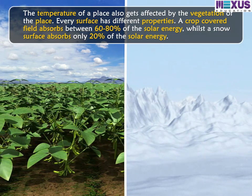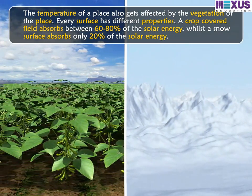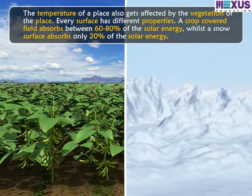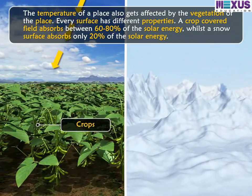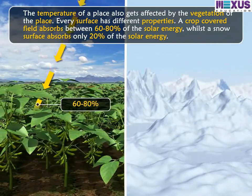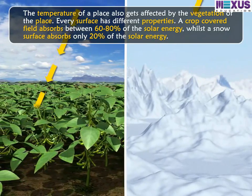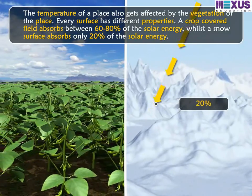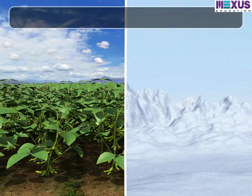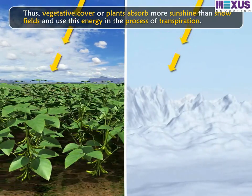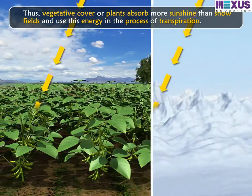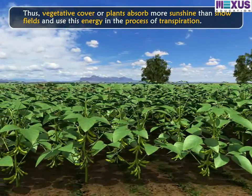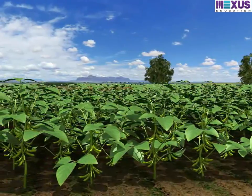The temperature of a place is also affected by the vegetation of the place. Every surface has different properties. A crop-covered field absorbs between 60–80% of solar energy. Vegetative cover or plants absorb more sunshine than snow fields and use this energy in the process of transpiration. Hence, these areas do not become very hot.